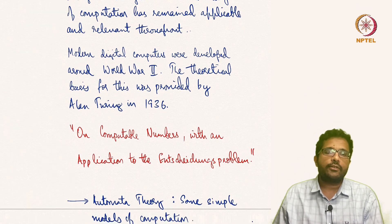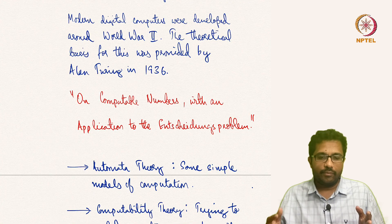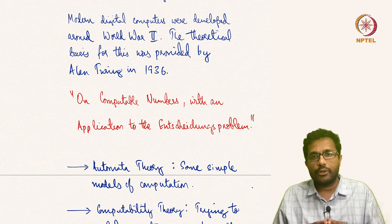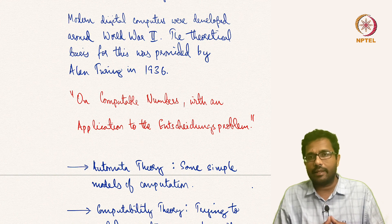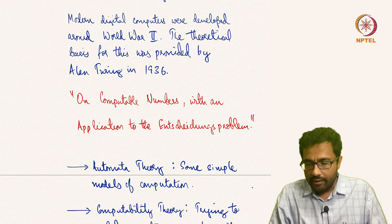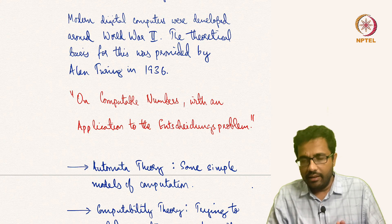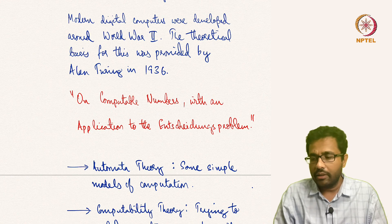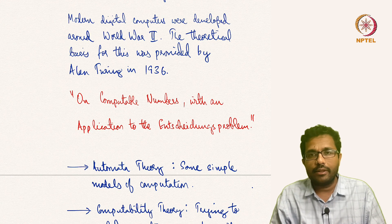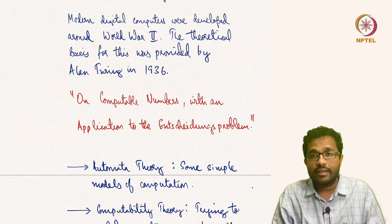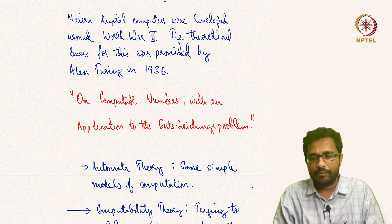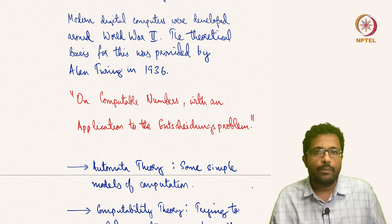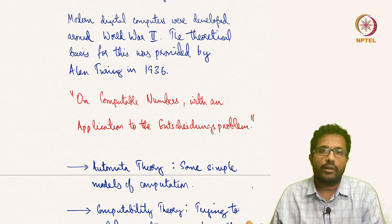The models of computers that we will use in this course are called Turing machines, devised by Alan Turing. The paper in which he proposed this model came out in 1936. It is called 'On Computable Numbers with an Application to the Entscheidungsproblem.' This paper gave the theoretical basis of what computers can do.